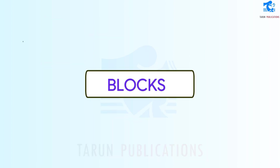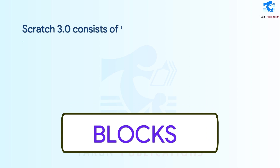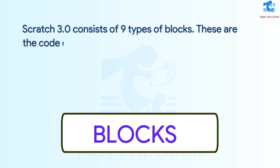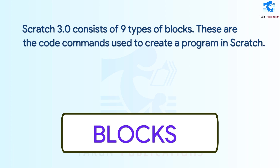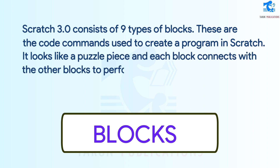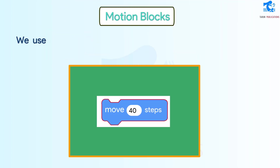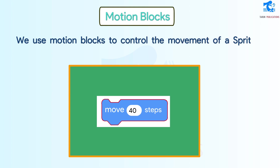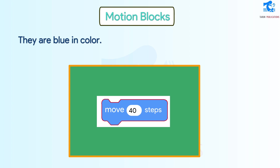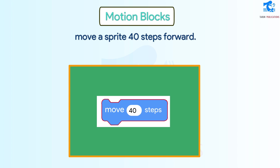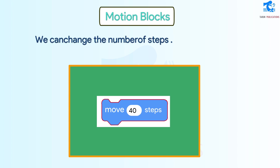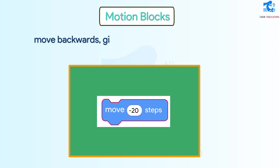Blocks. Scratch 3.0 consists of nine types of blocks. These are the code commands used to create a program in Scratch. It looks like a puzzle piece and each block connects with the other blocks to perform a task. Motion blocks: We use motion blocks to control the movement of a Sprite. They are blue in color. Example: We will use the motion block to move a Sprite 40 steps forward. We can change the number of steps. To make the Sprite move backwards, give a minus sign before the number as shown.